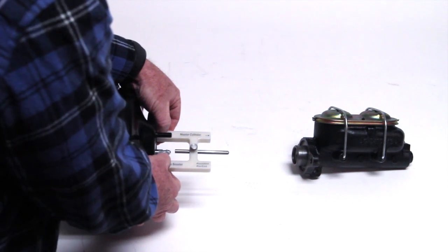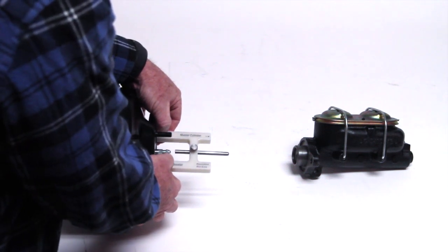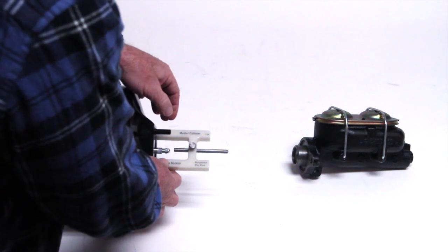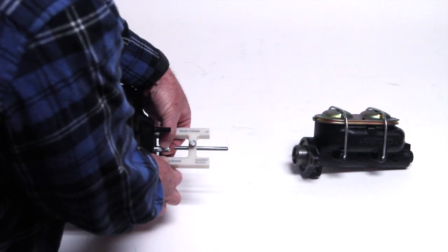So at this point, all you're going to do is you're going to adjust the pin in the booster to where it will come out and touch the bottom of the rod.